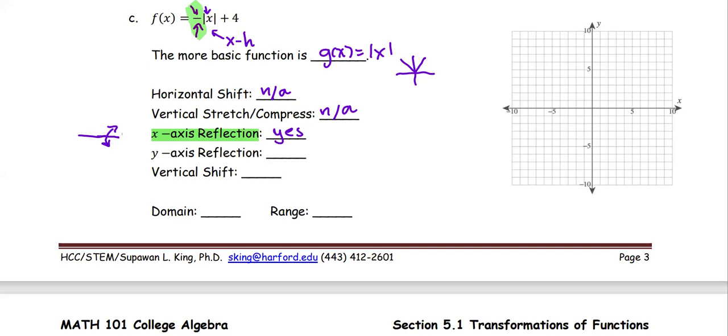For y-axis reflection, that means if you put negative x, it will get the same result as positive x value, which is true. Any positive or negative when you put in the absolute value is going to turn out to be the same value. So this is yes.